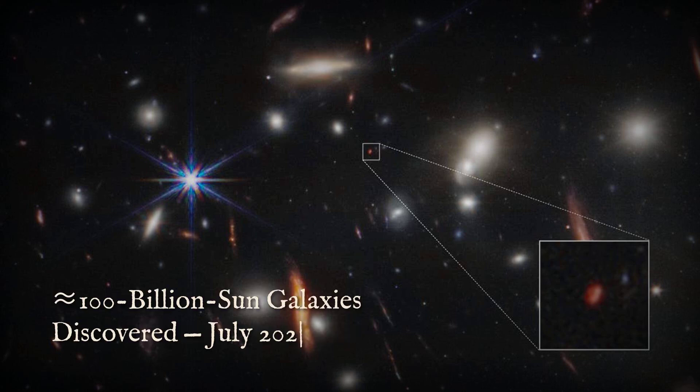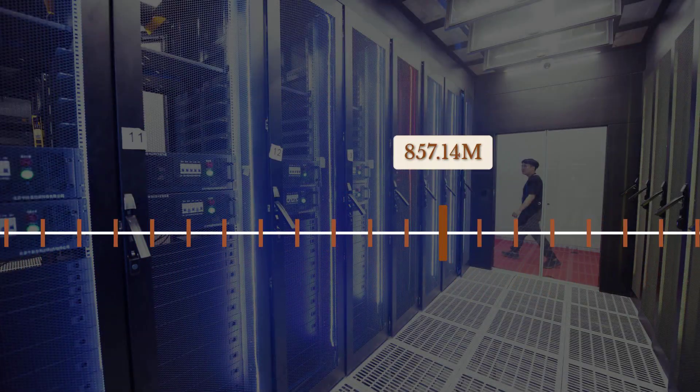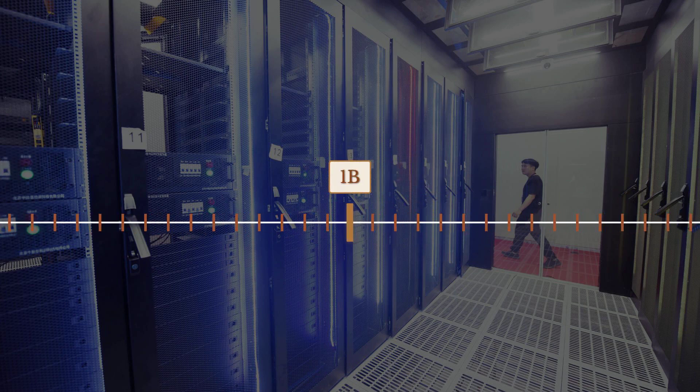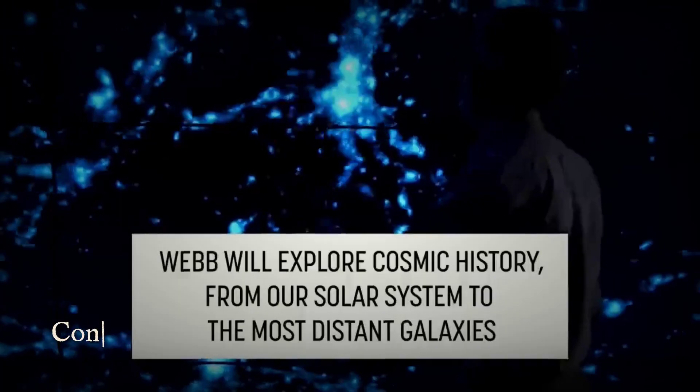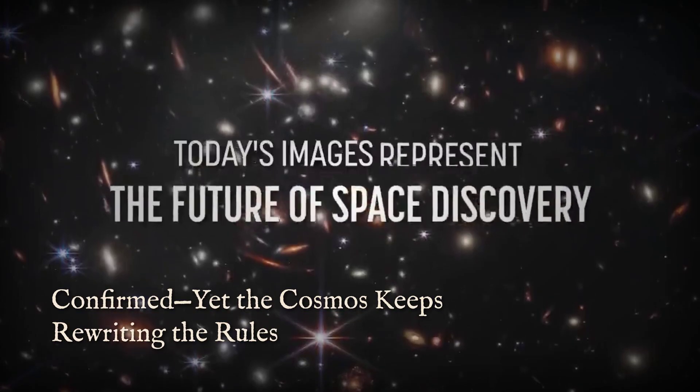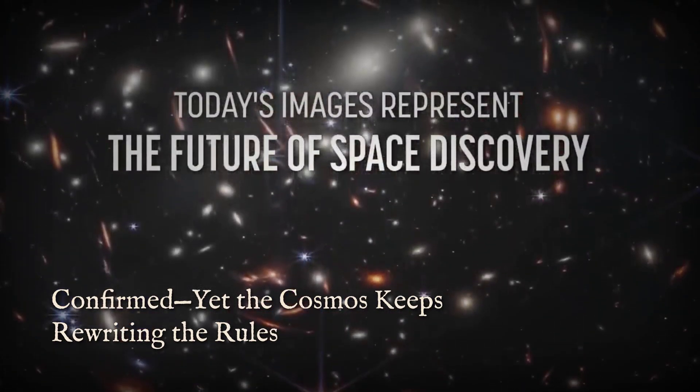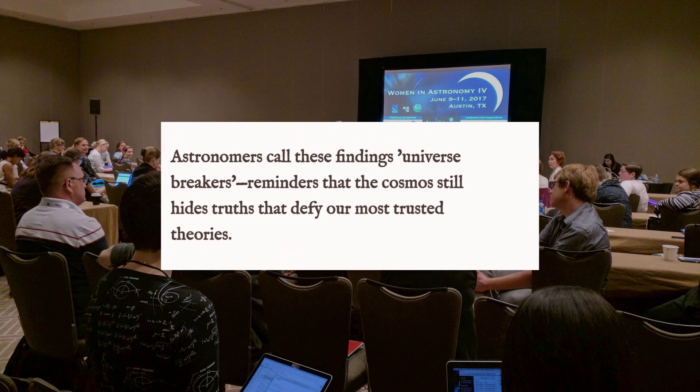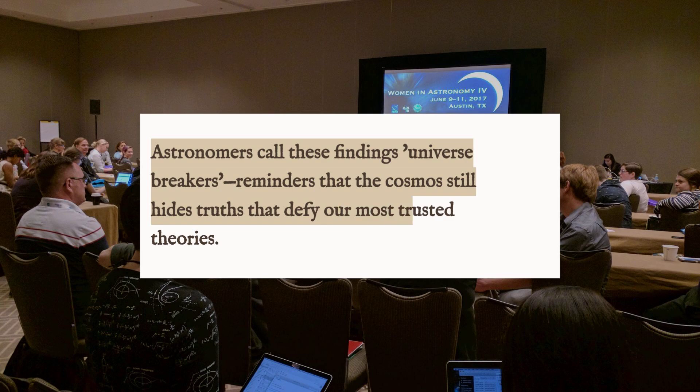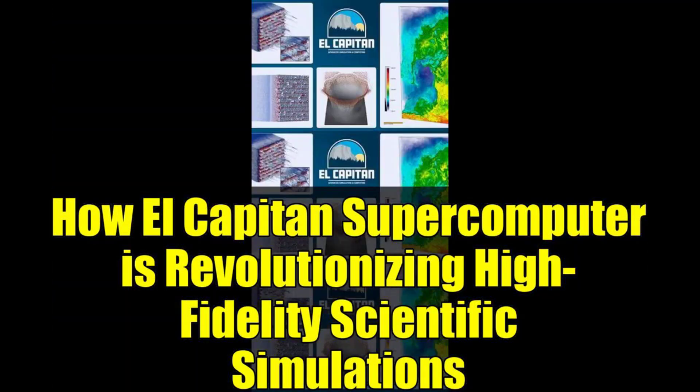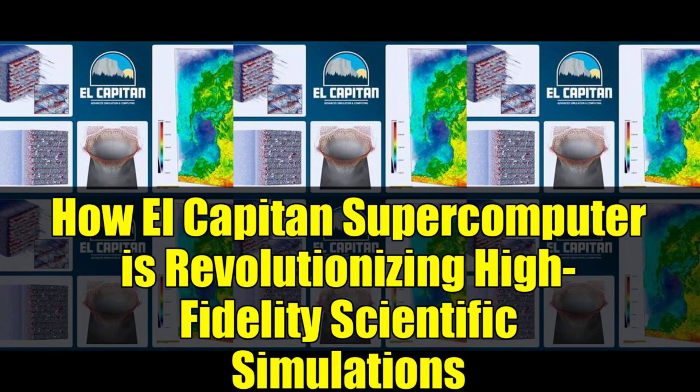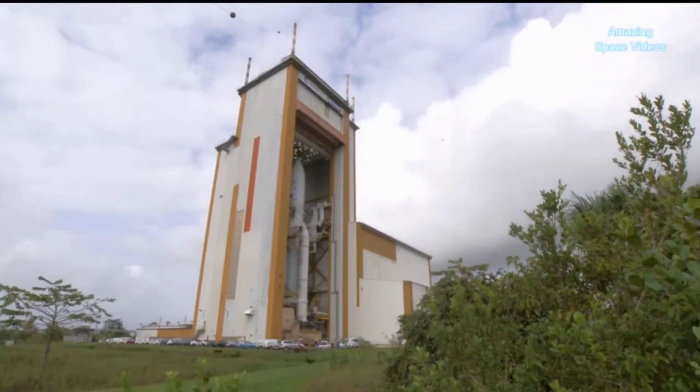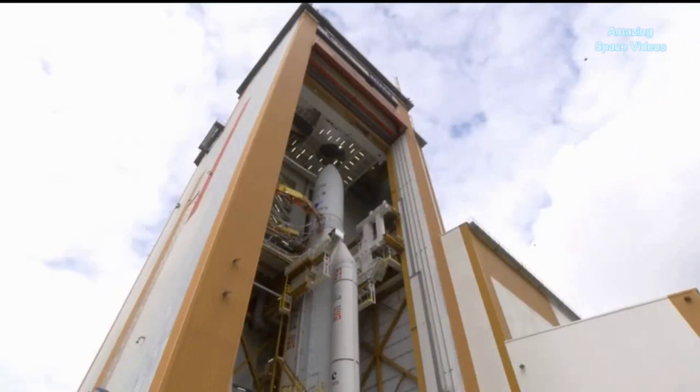In July 2022, the James Webb Space Telescope identified galaxies with masses near 100 billion suns existing just 500 to 700 million years after the Big Bang. According to the Lambda-CDM model, galaxies of this size should not appear until at least 1 billion years after the universe began. Peer-reviewed studies, including the JADES and CEARS surveys, confirmed the redshifts and luminosities of these objects. Yet the exact process that allowed such rapid growth remains unexplained. Published reactions from astronomers, some calling these "universe breakers," highlight the uncertainty. While some researchers propose earlier star formation or revised dark matter physics, no consensus has been reached. Follow-up observations with Webb and upcoming missions like the Roman Space Telescope are planned to test these findings.